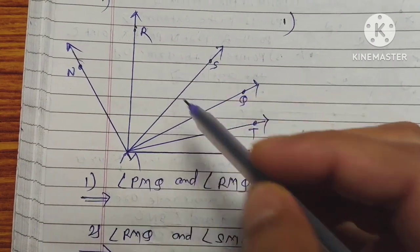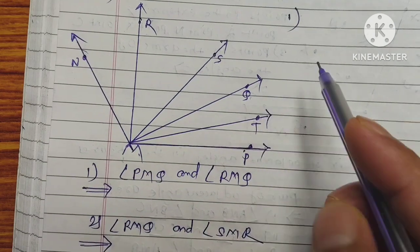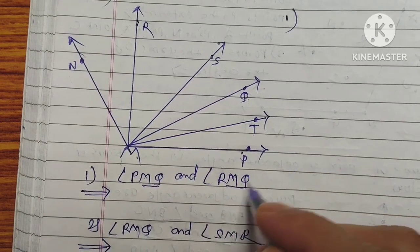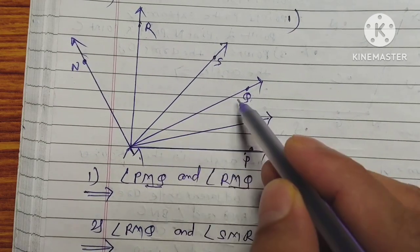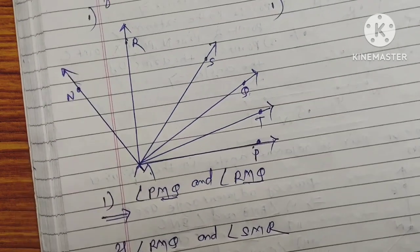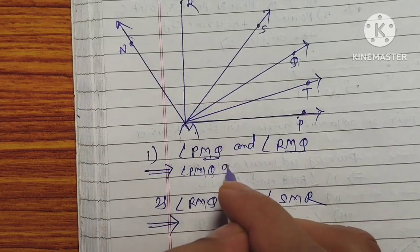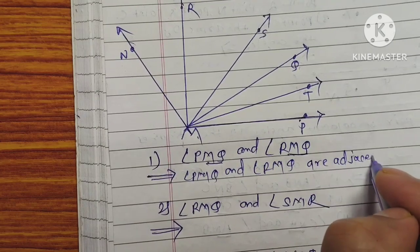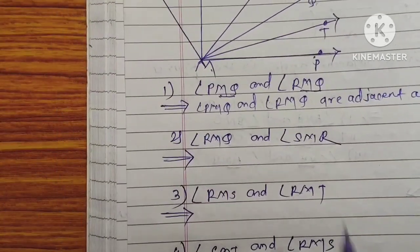Looking at angle PMQ and angle RMQ in the figure, this is a pair of adjacent angles. Angle PMQ and angle RMQ share a common arm and common vertex.